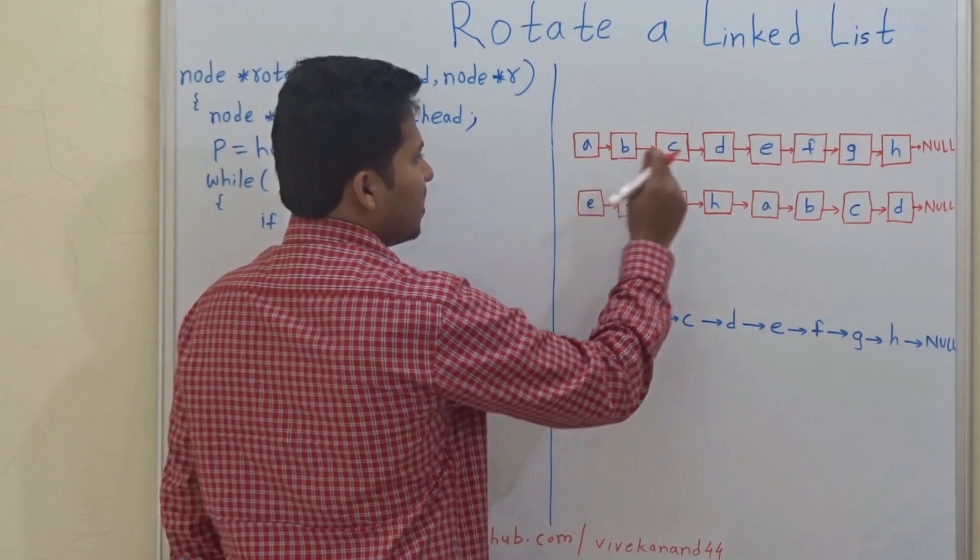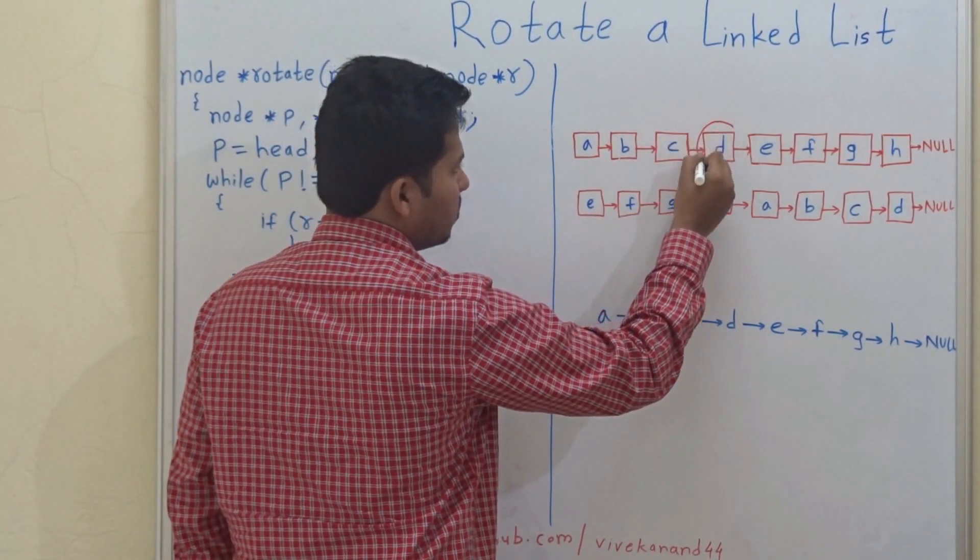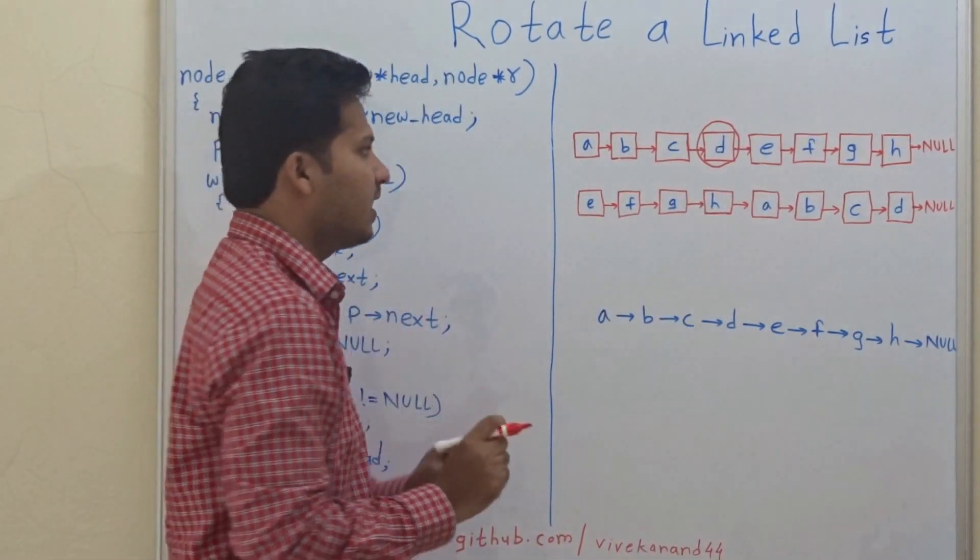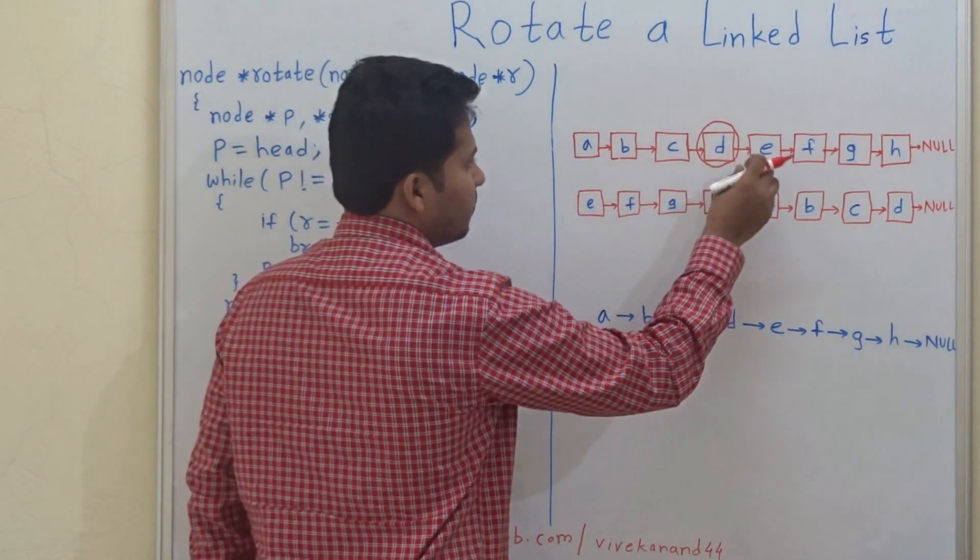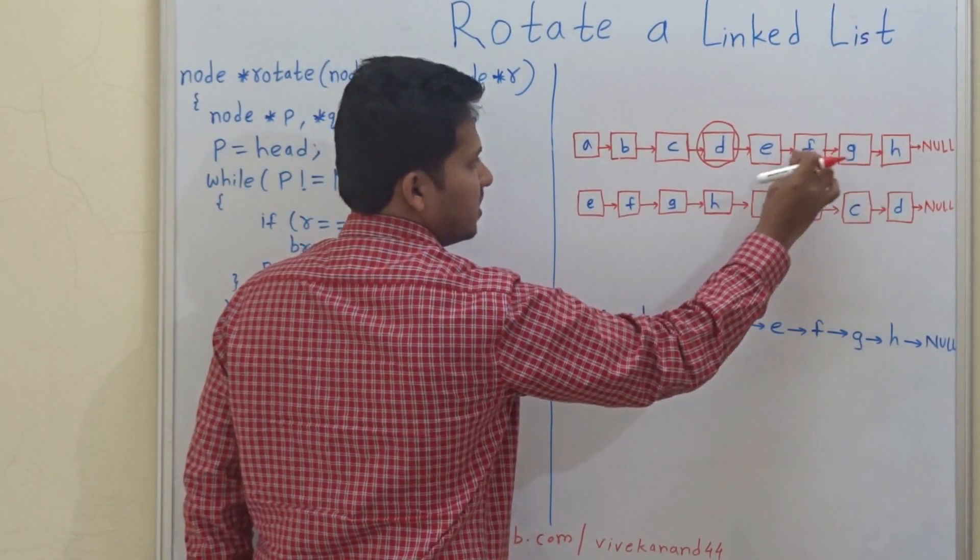So we are asked to rotate this linked list around node D. So this means that the nodes which are coming after D, these nodes E, F, G, H,